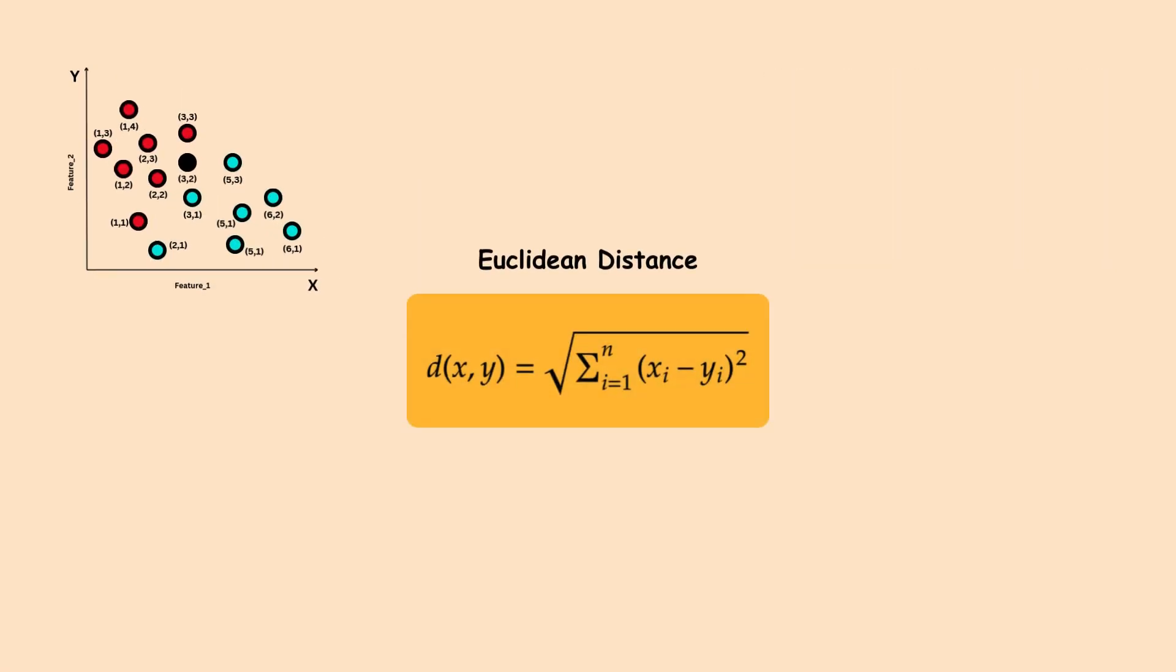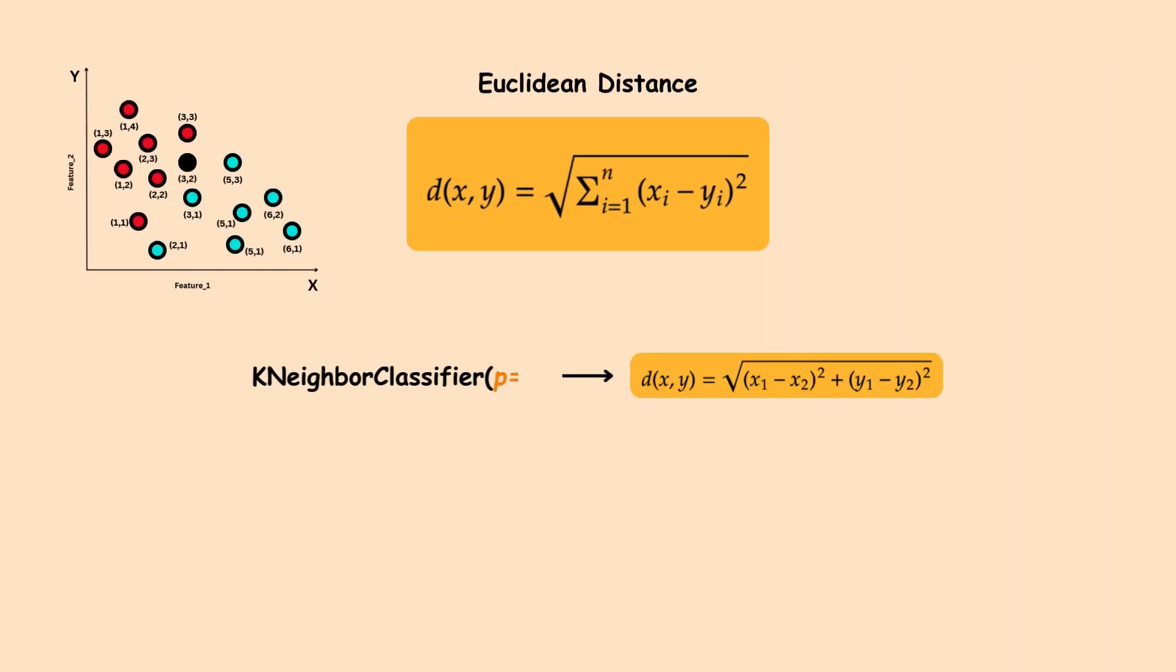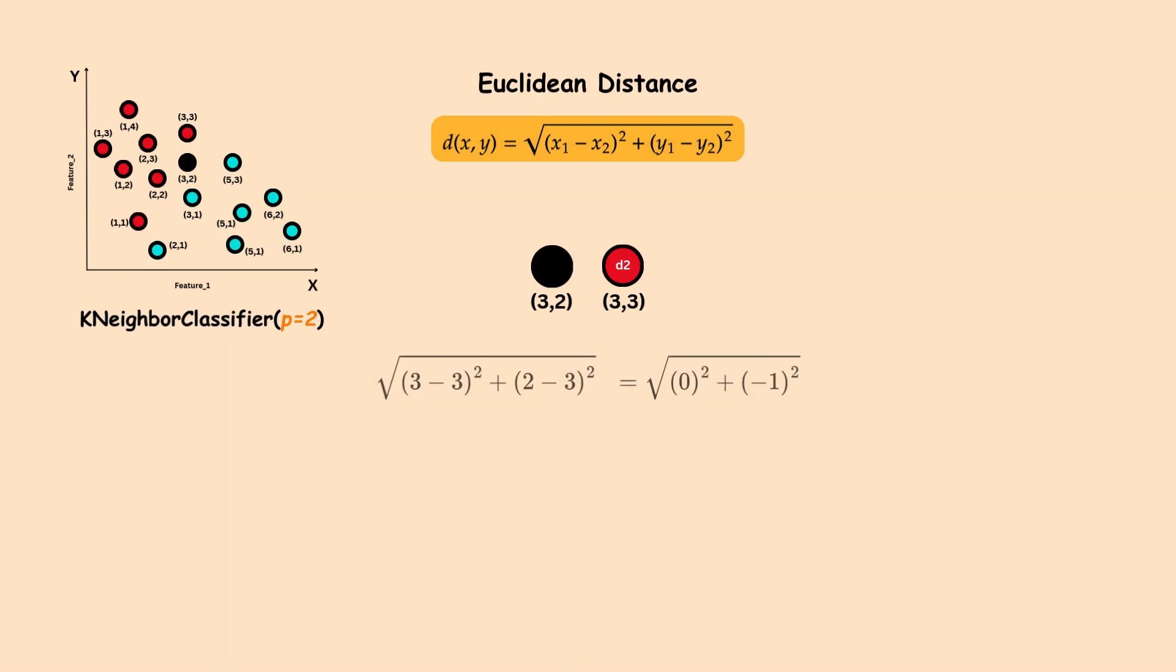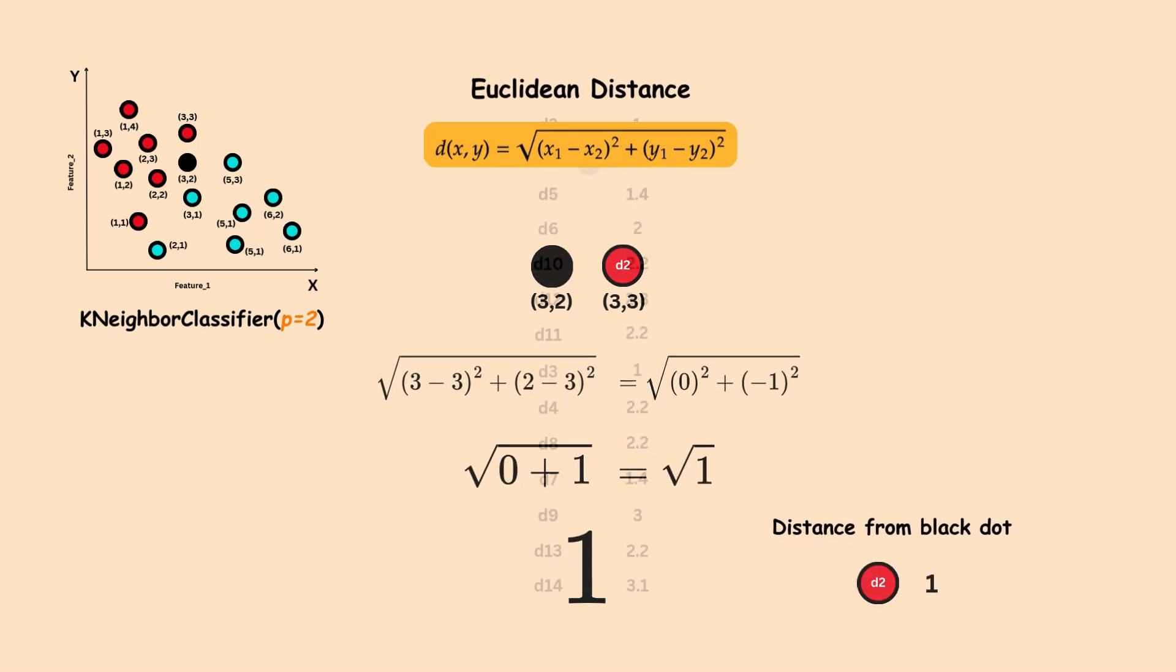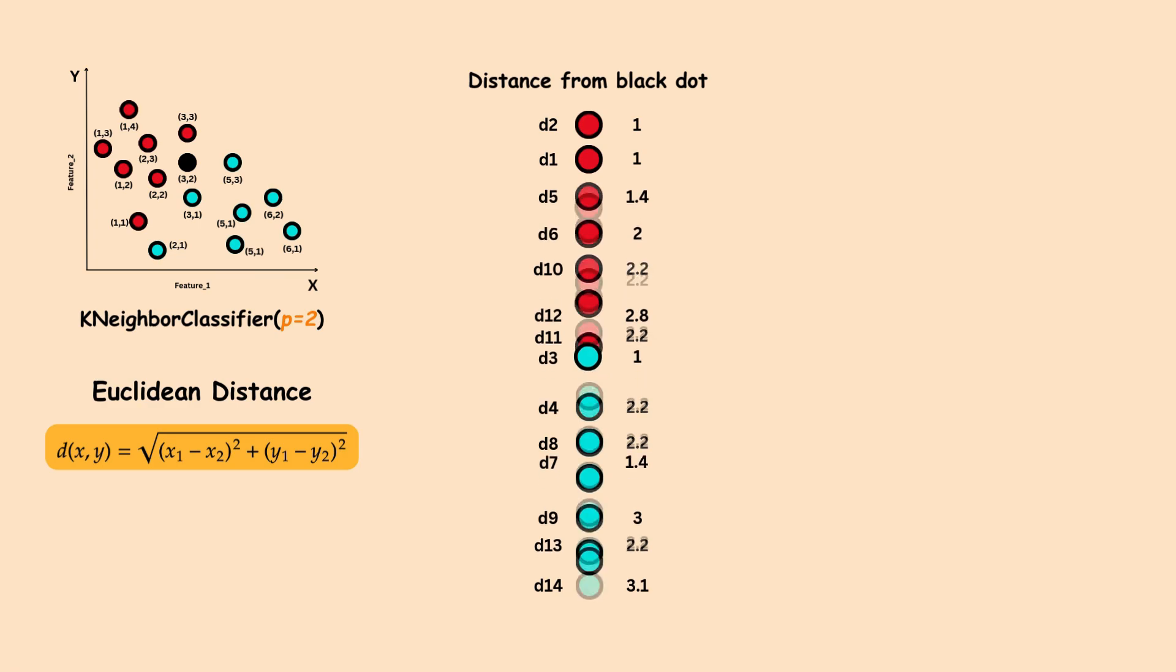Next up, the Euclidean metric. This is the default behavior of the K-neighbor classifier. For this, we square the differences between the coordinates, sum them up, and take the square root. Once we do this for all points, we sort the distances, pick the closest five, and classify the point based on the majority vote.